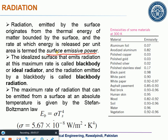The first property is emissivity, which is about the emission of radiation from a body surface. Radiation emitted by the surface originates from the thermal energy of matter — the kinetic energy of molecules. The rate at which energy is released per unit area is termed the surface emissive power. Power here means rate of change of energy per unit time.